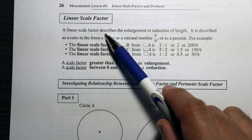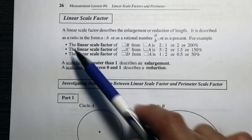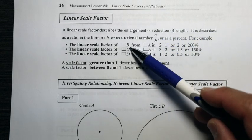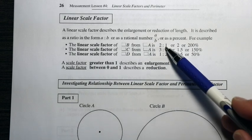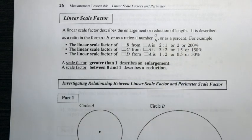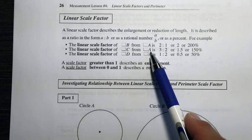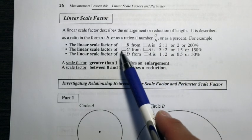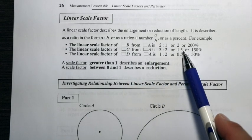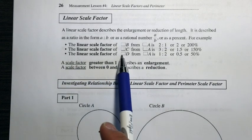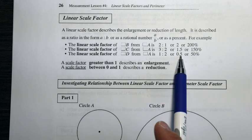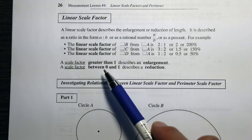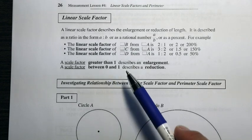When we talk about linear scale factor, it describes the enlargement or reduction of length. It is described as a ratio in the form A to B, or as a rational number A over B, or even as a percent. For example, the linear scale factor of rectangle B from A is 2 to 1, or 2, or 200%. The linear scale factor of rectangle C from A is 3 to 2, or 1.5, or 150%. The linear scale factor of rectangle D from A is 1 to 2, or 0.5, or 50%. A scale factor greater than 1 describes an enlargement, and a scale factor between 0 and 1 describes a reduction.